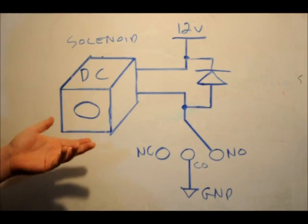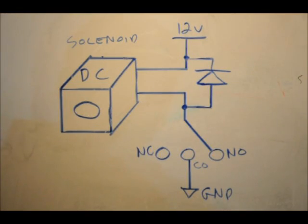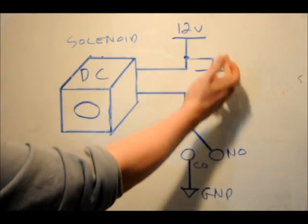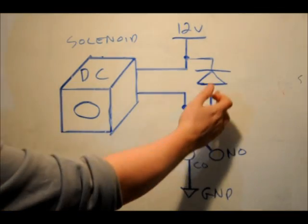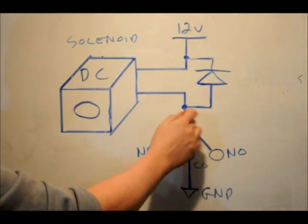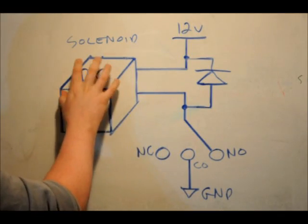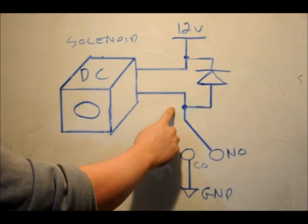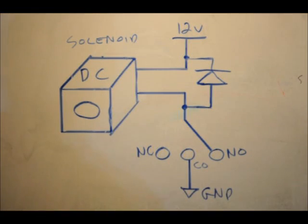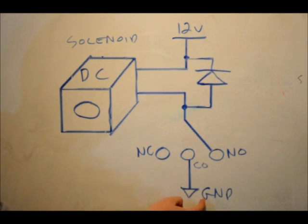In any case, so what we're going to do is we're going to connect this DC solenoid to 12 volts. We're going to place the cathode, the negative of the diode, to the 12-volt line, the anode, the positive of the diode, to the secondary wire of the DC solenoid base, and we're going to connect that wire to our normally open pin, and we're going to connect our ground line to our common pin.